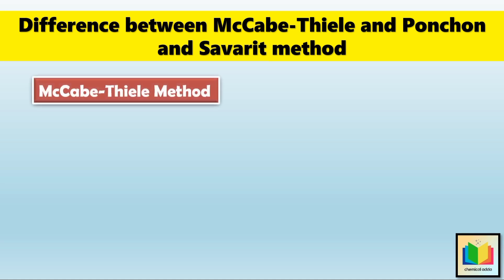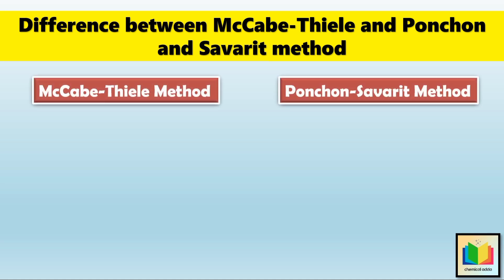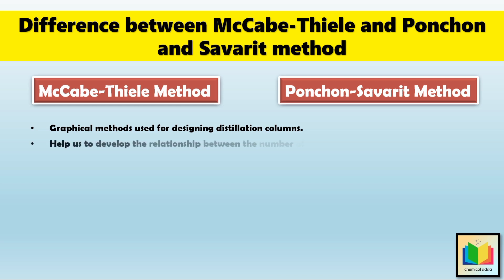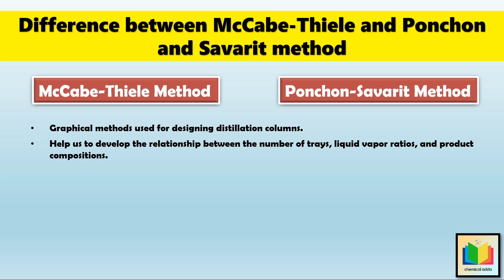The McCabe-Thiele method and the Ponchon-Savarit method are two graphical methods used for designing distillation columns. These two methods help us to develop the relationship between the number of trays, liquid-vapor ratios, and product compositions. Basically, these two methods are used to calculate the number of trays and to design distillation columns.